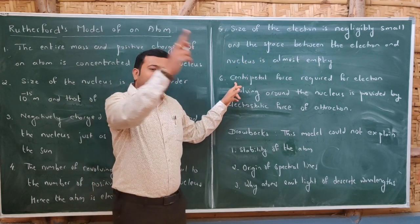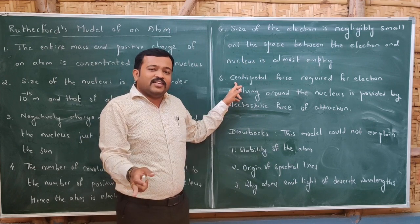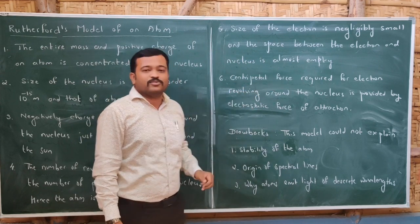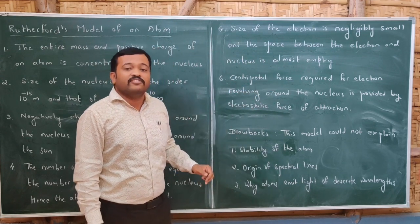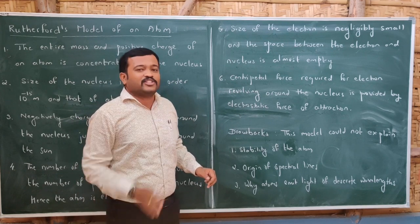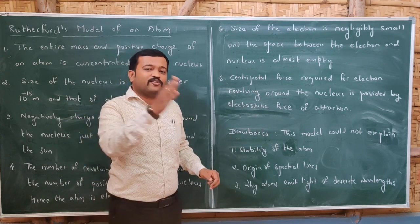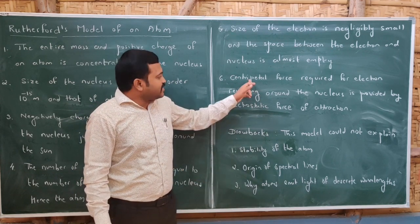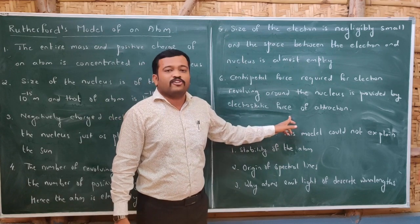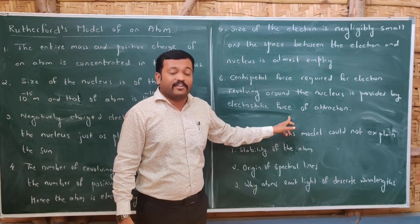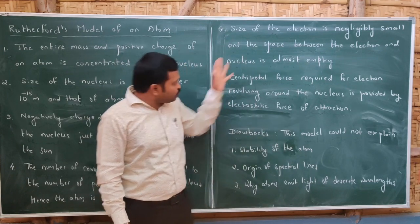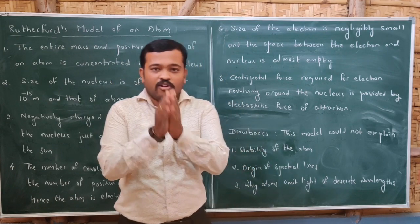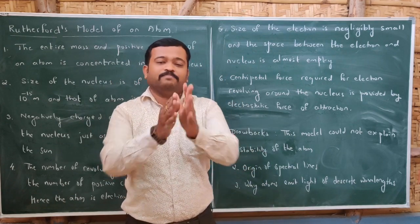If electrons are revolving around the nucleus, there must be a centripetal force. That centripetal force is provided by the electrostatic force of attraction between the electron and the nucleus.